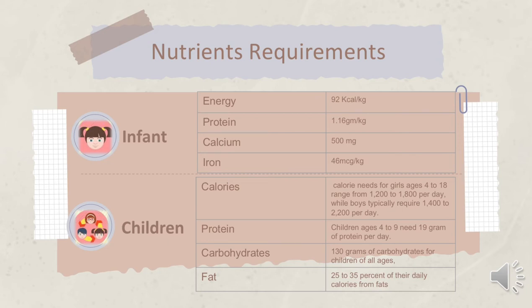Next is children. The calorie needs for girls ages 4 to 18 range from 1,200 to 1,800 per day, while boys typically require 1,400 to 2,200 per day. Children ages 4 to 9 need 19 grams of protein per day. Carbohydrates: 130 grams for children of all ages. Fat: 25 to 35 percent of their daily calories from fats.